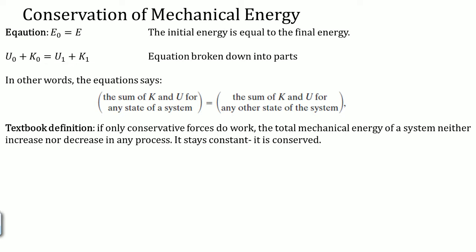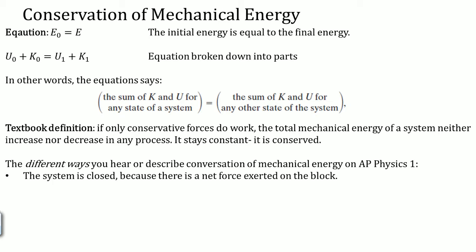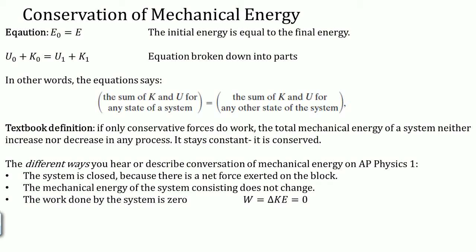On the AP Physics test and exam, it says it in different ways. These are the different ways you can hear conservation of mechanical energy on the AP Physics 1 exam. One: the system is closed because there is no net force exerted on the block or object or mass. The mechanical energy of the system does not change. The work done by the system is zero — W equals change in kinetic energy equals zero.